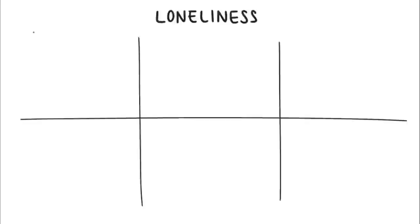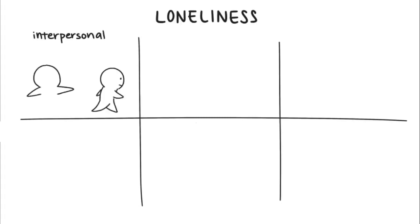There are six main types of loneliness. 1. Interpersonal loneliness. This is the result of losing a significant or intimate relationship.